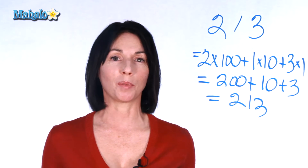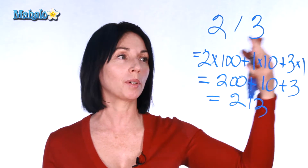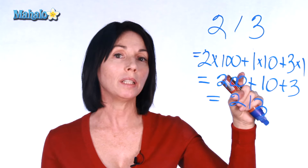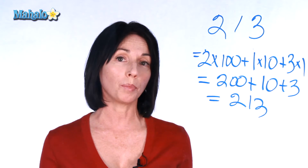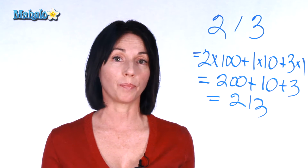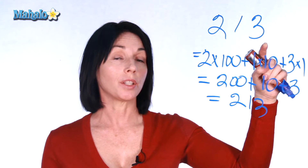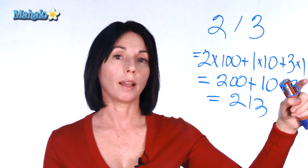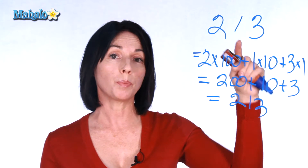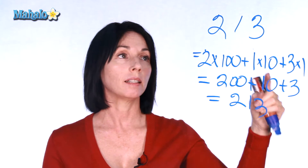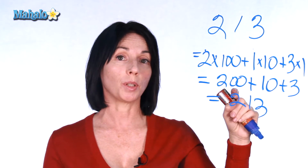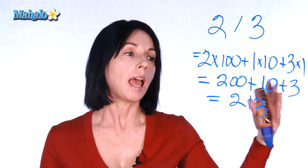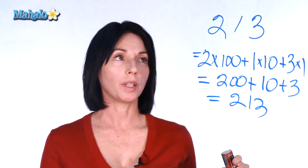Now this might sort of seem like we're going backwards — we have this nice simple number and then we write this complicated thing. But actually this is how we determine how we use whole numbers in our base 10 numbering system. The digit in this position is always just multiplied by 1, and the digit in this position is multiplied by 10. So those place values help to give you the value of the number.